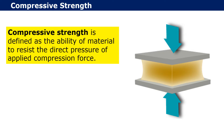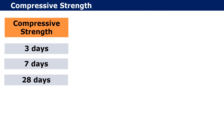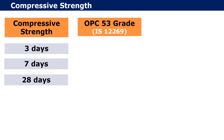Compressive strength is defined as the ability of a material to resist a direct pressure or applied compression force. We generally calculate compressive strength after 3 days, 7 days, and 28 days. For OPC we refer IS 12269, and for PPC we refer IS 1489.